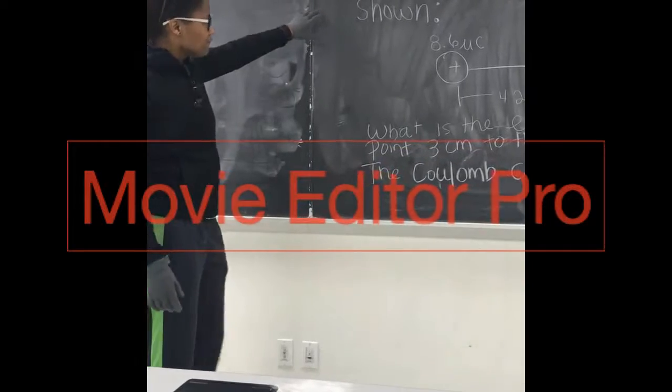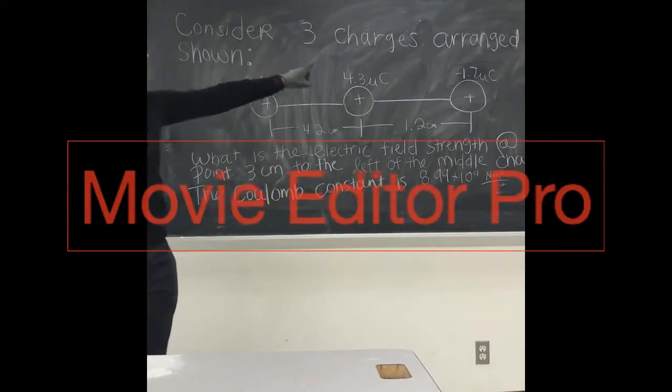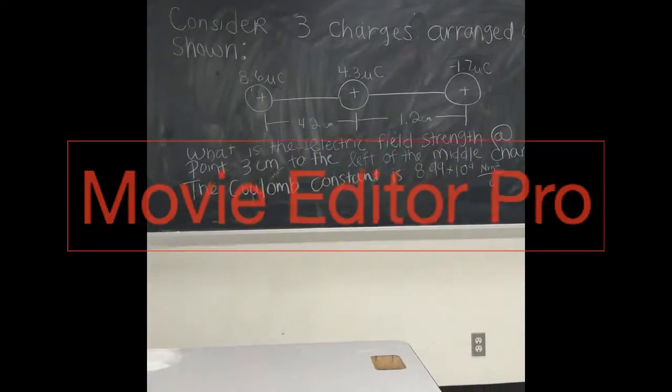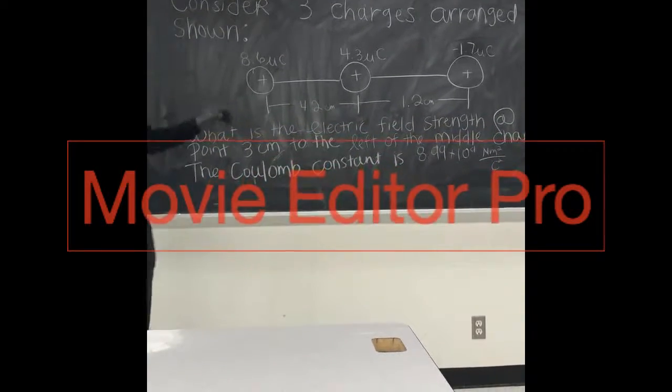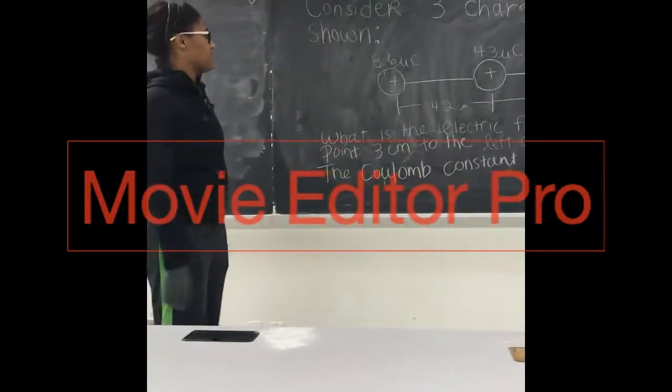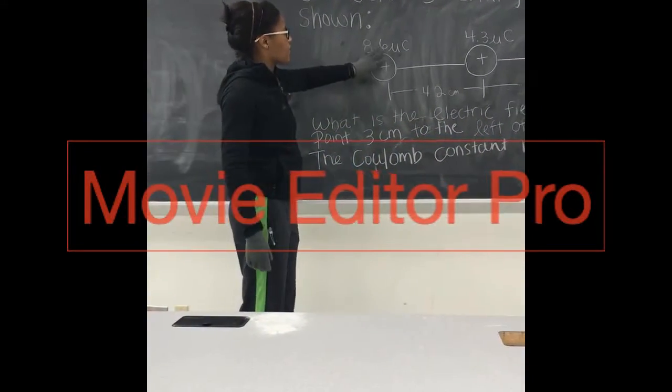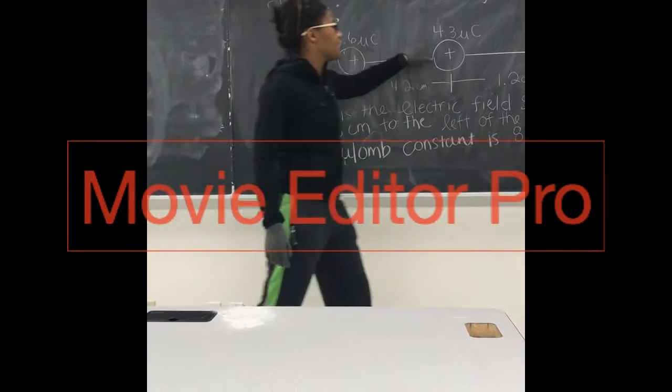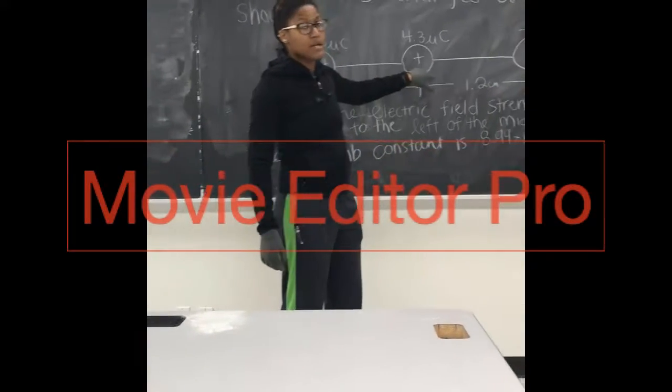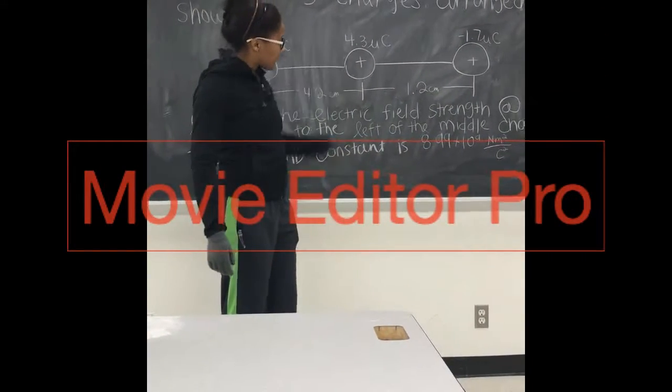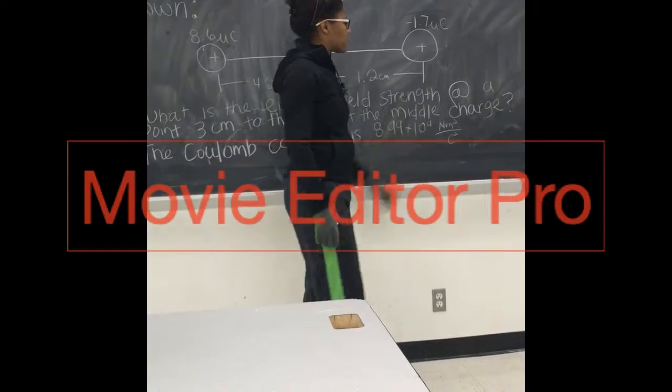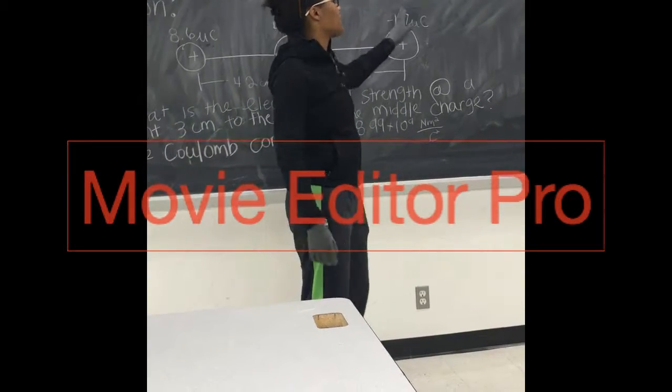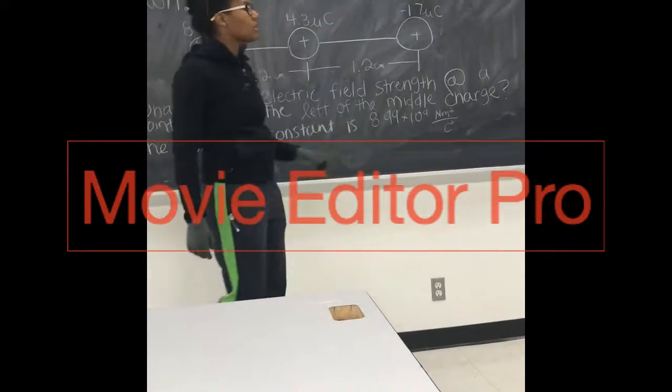So, let's read this first question. Consider three charges arranged as shown. Now, this is your figure. It's giving you some information. What does this information mean? It means here this charge is 8.6 microcoulombs and 4.2 centimeters from this charge, you have another charge that's 4.3 microcoulombs. And from that charge forward, 1.2 centimeters from there, you have negative 1.7 microcoulombs.